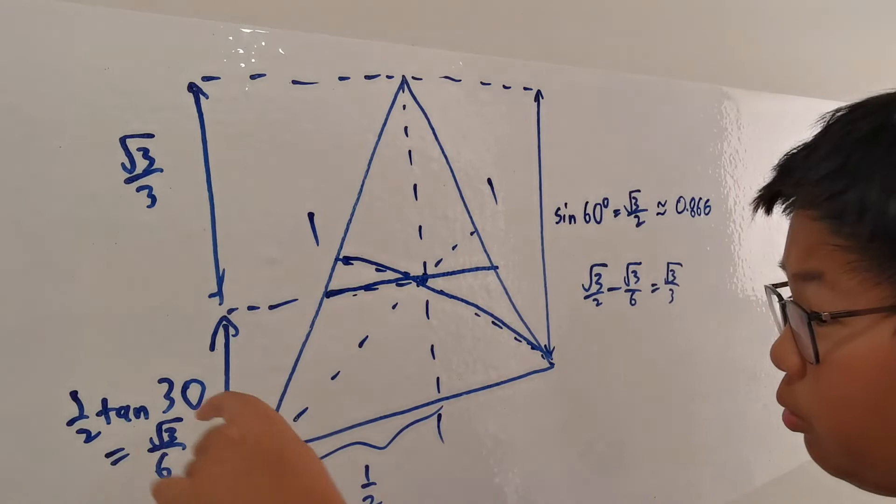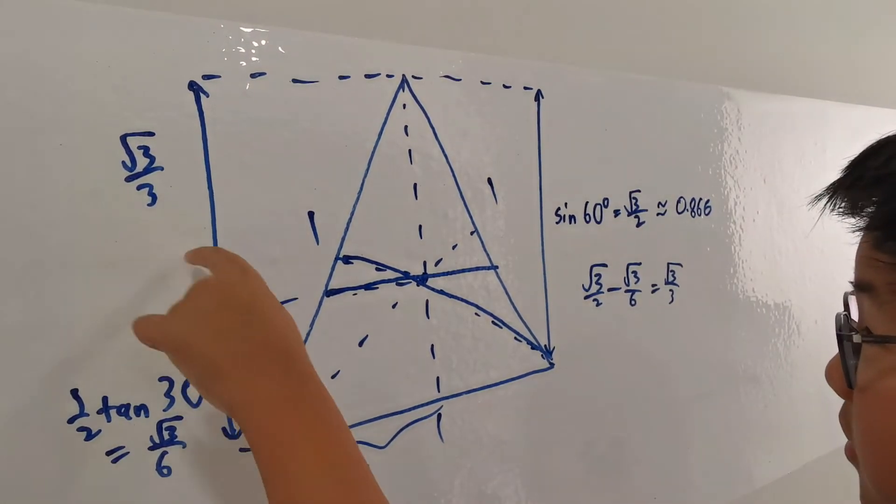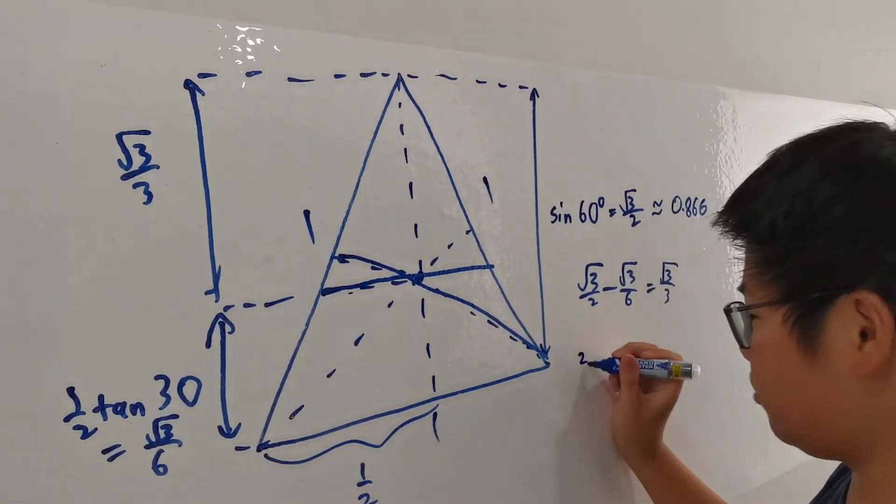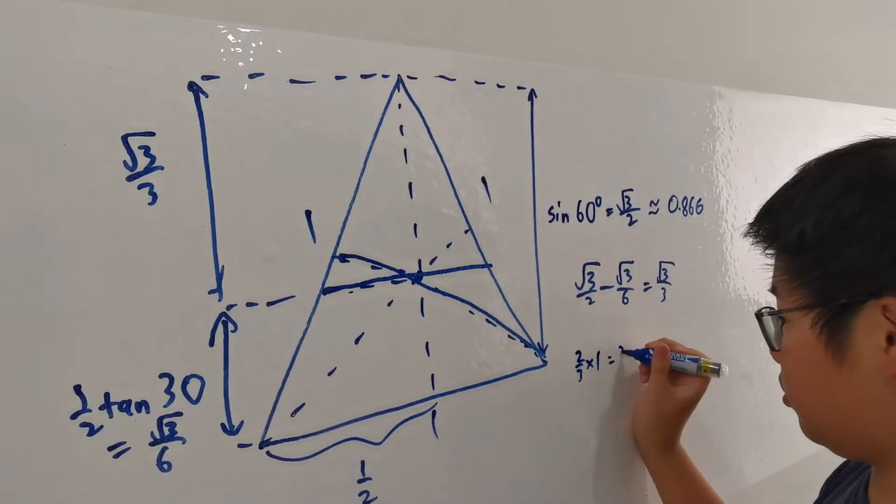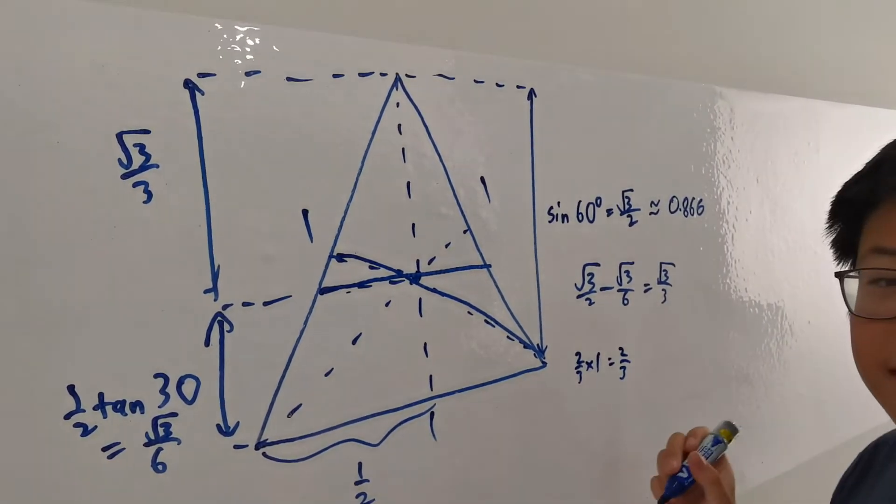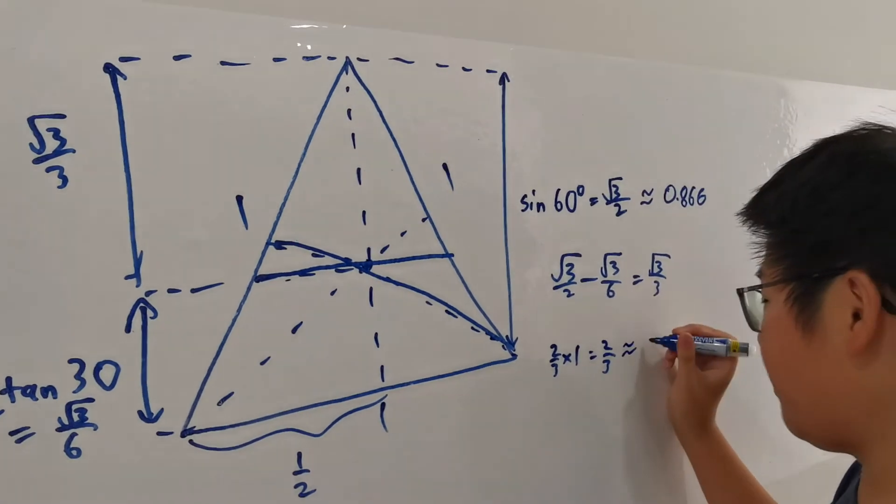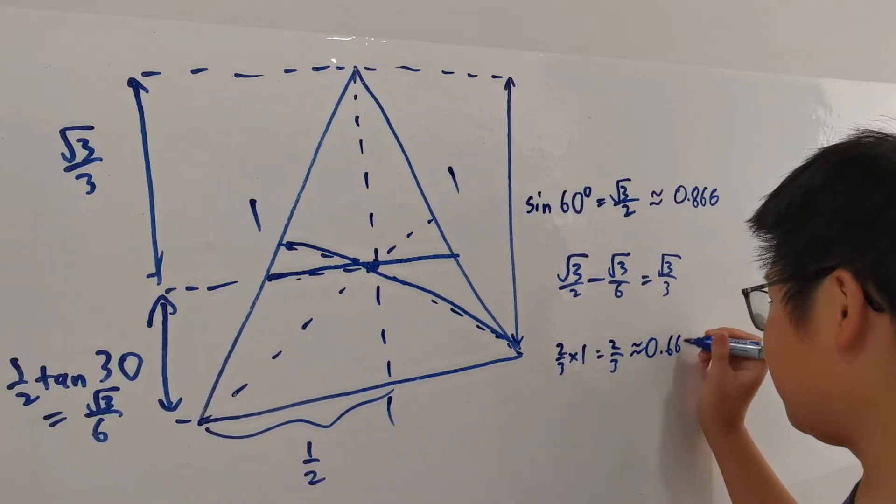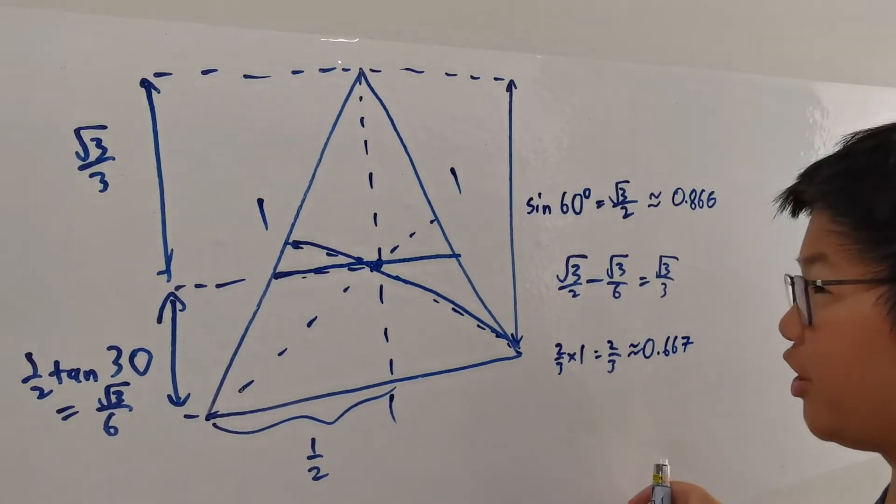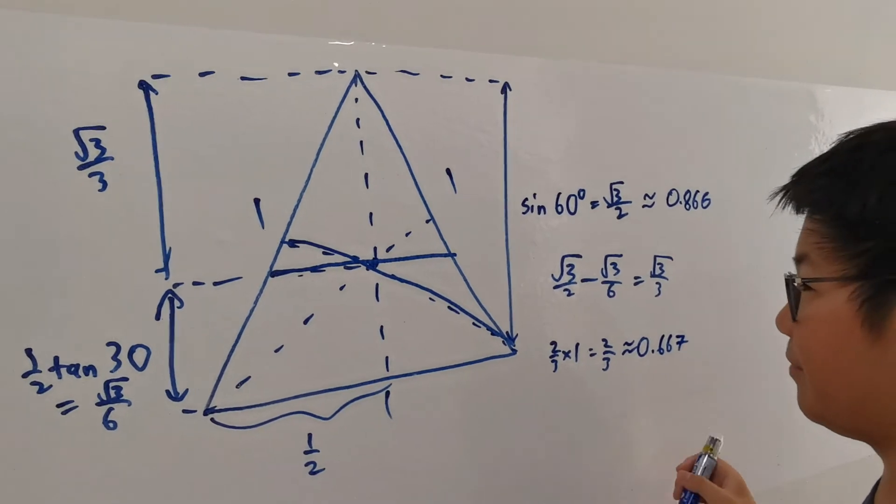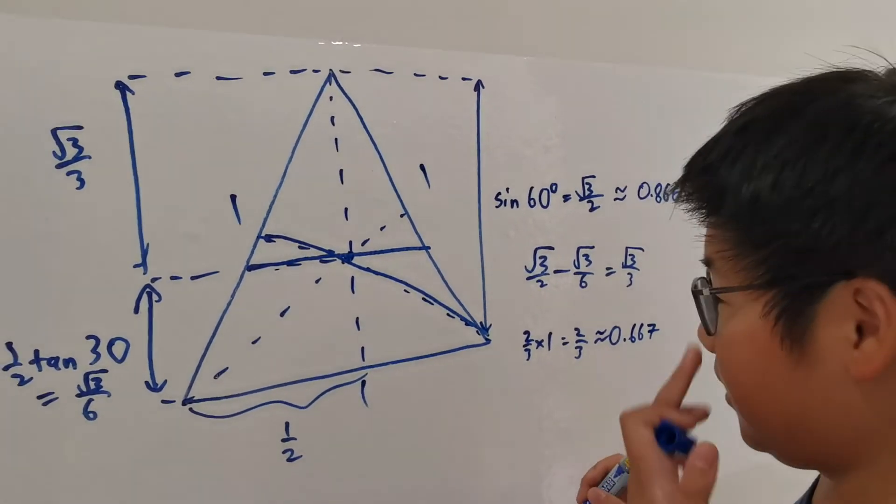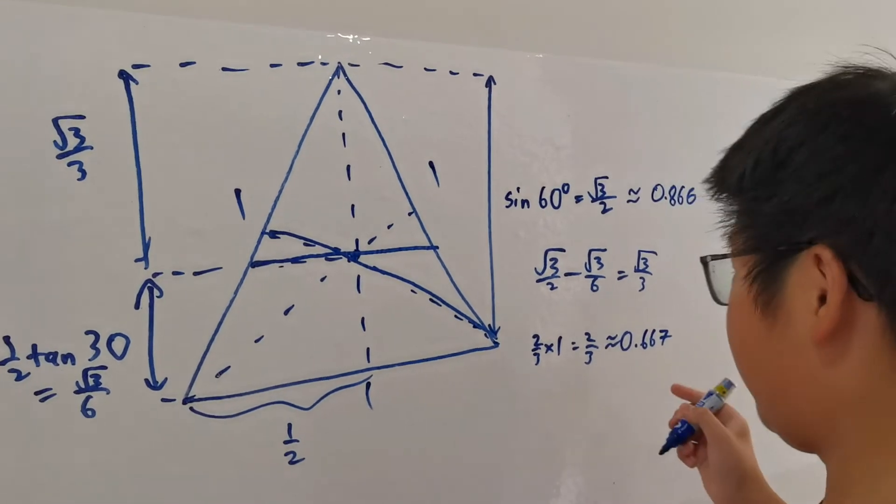Since this is 1 third way up the triangle, and this is 2 thirds, so this line will be 2 thirds times 1 equals to 2 thirds. And if you don't remember your fractions, it will amount to 0.667. This is a quick refresher on fractions for some of you who can't remember. And obviously, this is the minimum distance required.